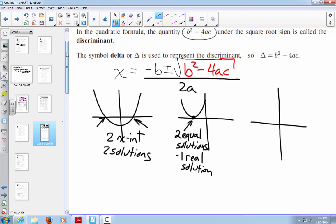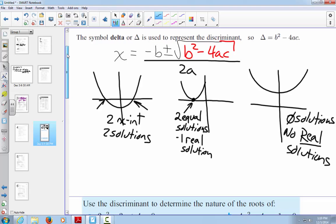Then I have another situation, and this is the one where the b squared minus 4ac comes into play. We've got a quadratic that does not cross the x-axis. And when it doesn't cross the x-axis, there are no real solutions. Because basically, if you're trying to solve for x, you can't.